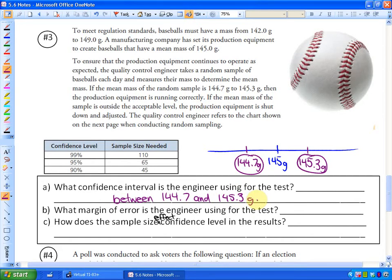Part B says what margin of error is the engineer using for this test? So we basically have to know how far is each of these values from the mean. So what are these distances? And these distances, you can do it mathematically or otherwise. This will be plus 0.3 grams and this will be minus 0.3 grams. Or another way to do that is find the difference or the range of your confidence interval. So 145.3 minus 144.7 and that's 0.6. And then divide it by 2 and you'll get 0.3.